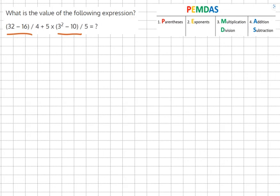And 32 minus 16 equals 16 over 4 plus 5 times 3 squared minus 10. So inside the brackets we do PEMDAS again.